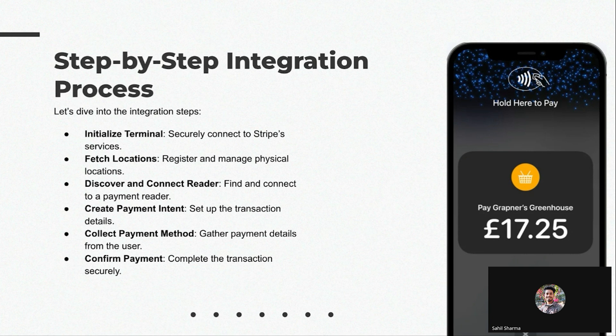The payment intent holds the information about the transaction — such as the amount, the currency, and the payment method the user has selected. After creating the payment intent, we can then call the collect payment method. The Stripe Terminal provides this collect payment method, which directly initiates the transaction and shows the UI for the transaction.